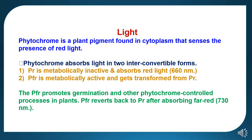Under light, phytochromes are important substances impacting germination. Phytochrome is a plant pigment found in the cytoplasm that senses the presence of red light. Phytochrome absorbs light in two interconvertible forms: Pr, which is metabolically inactive and absorbs red light at 660 nm, and Pfr, which is metabolically active and is transformed from Pr. Pfr promotes germination and other phytochrome-controlled processes in the plant. Pfr reverts back to Pr after absorbing far-red light at 730 nm.